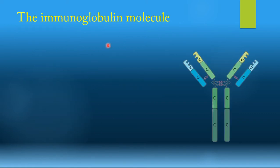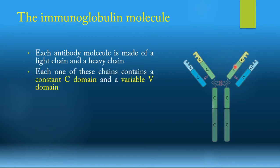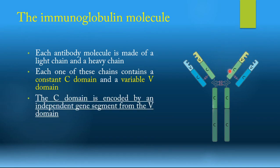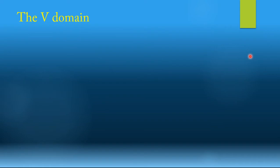Now let's talk about the immunoglobulin molecule, since we will be basically talking about its production. The immunoglobulin molecule is made of a heavy chain and a light chain. Each one of these chains is made of two domains: the constant domain and the variable domain — the C and the V. The C is encoded by an independent gene segment from the V domain, so each domain is encoded by a different segment of the genome. The variable domain is the one responsible for the ability of having antibodies specific for all antigens, which is why we will be discussing the V domain further.